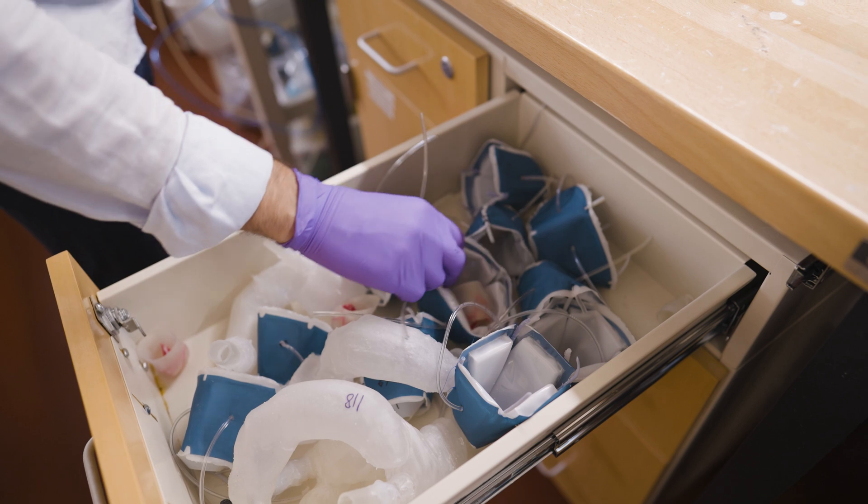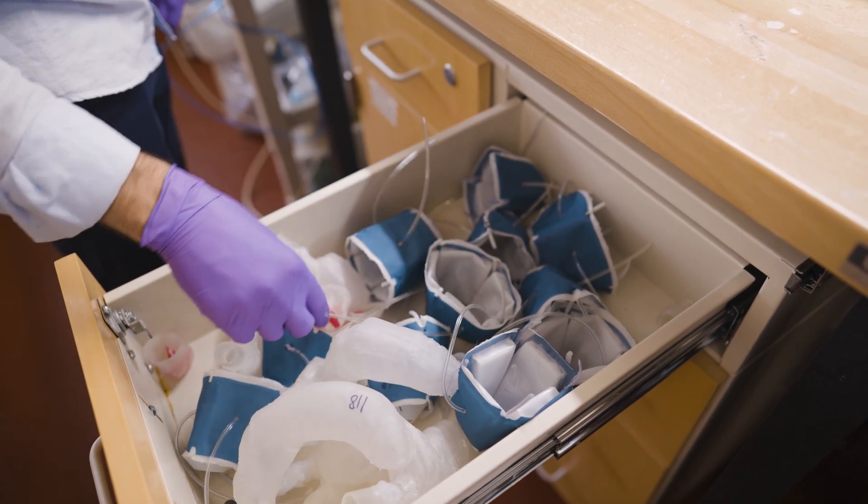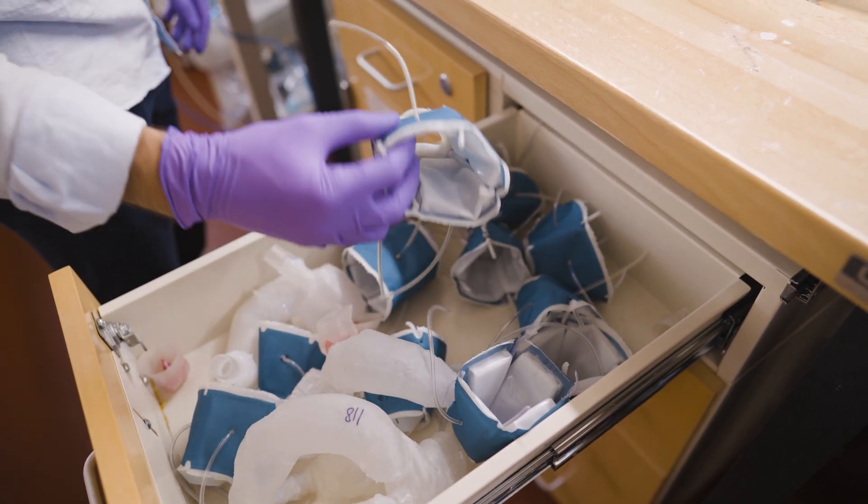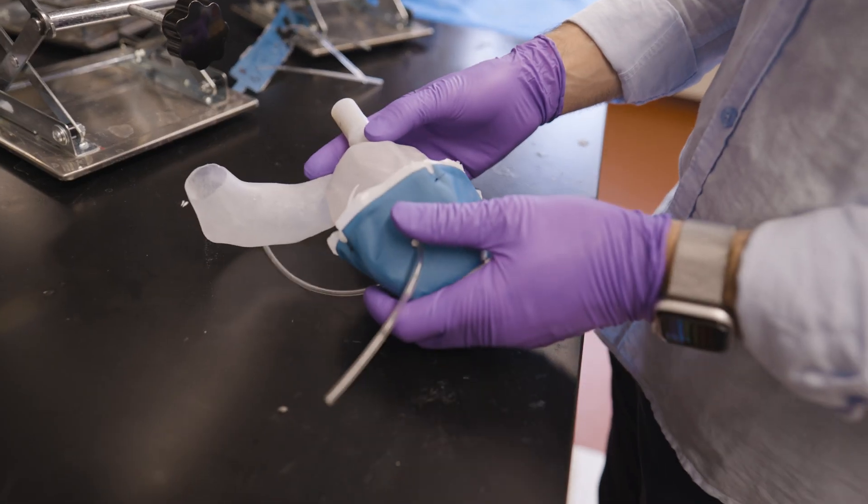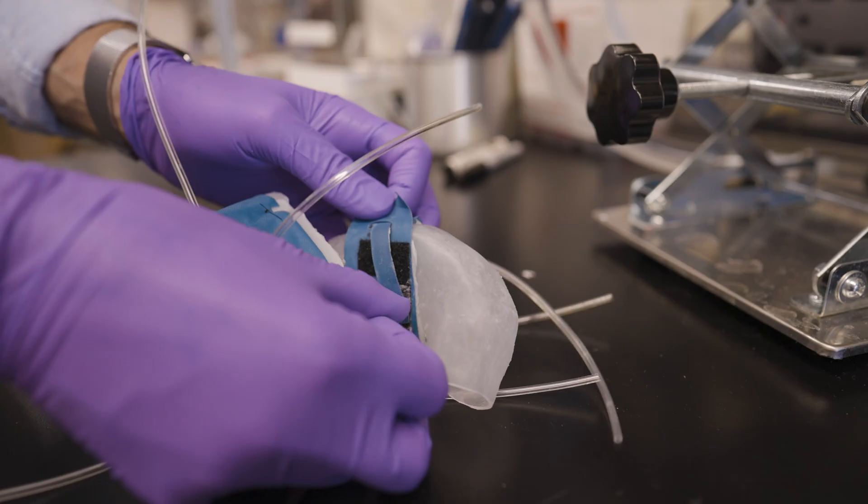To mimic the heart's pumping action and the motion of the aortic valve in disease, the team has fabricated sleeves, similar to blood pressure cuffs, that wrap around a printed heart and aorta.